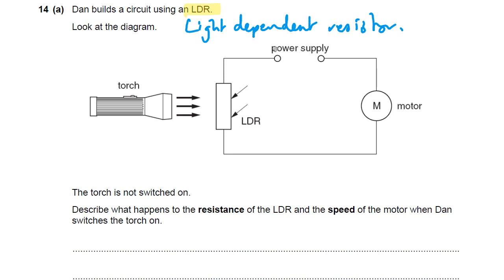So the resistance depends on light. The torch is not switched on. Describe what happens to the resistance of the LDR and the speed of the motor when Dan switches the torch on.